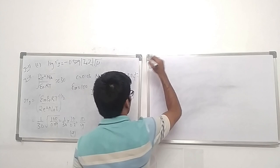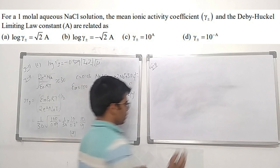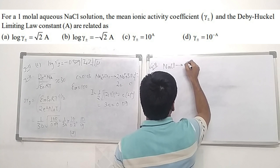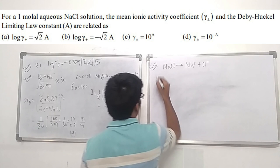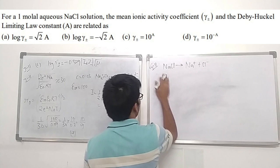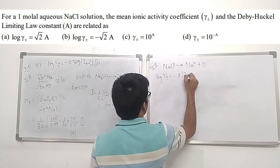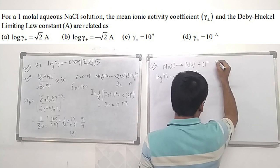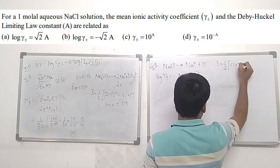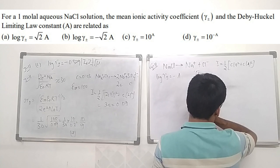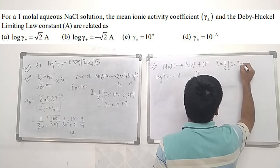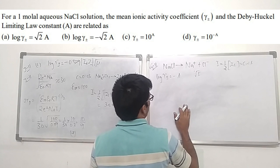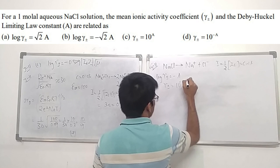From GATE 2001: for a 1 molal aqueous NaCl solution, find the relation between γ± and A. NaCl dissociates to Na⁺ + Cl⁻. Both z₊ and z₋ are 1, so |z₊z₋| = 1. I = ½(C·1² + C·1²) = C = 1 (since molality is 1). Therefore log γ± = −A·1·√1 = −A, giving γ± = 10^(−A), which is option D.